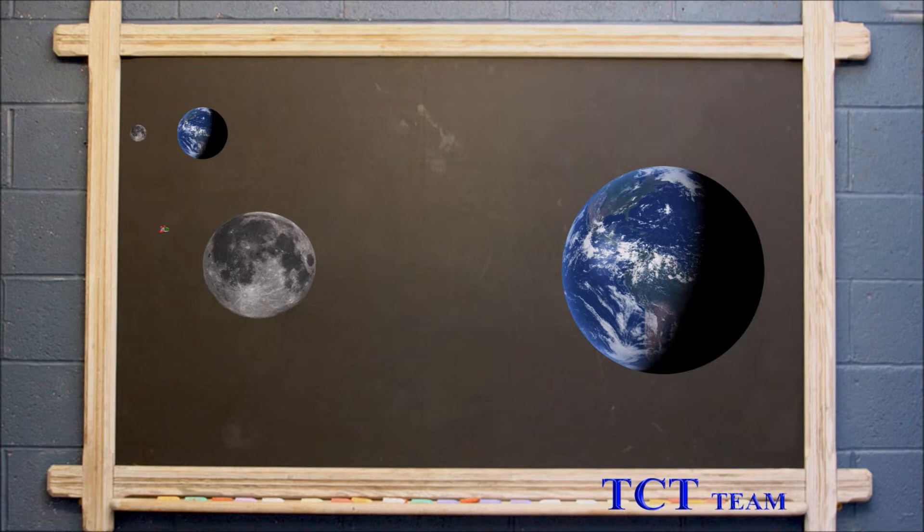But a problem arises when the Moon moves around the Earth. From our perspective, the distance between the Earth and the Moon decreases, and the Moon has gotten smaller. But the distance measured in time is still 1.3 seconds.